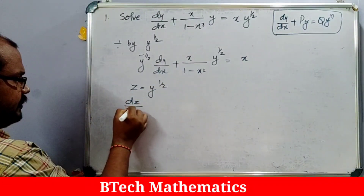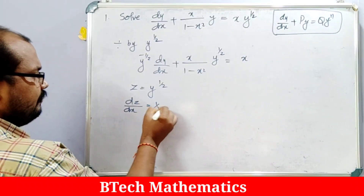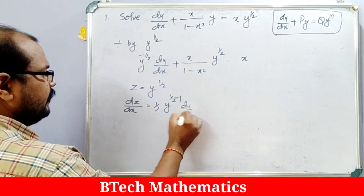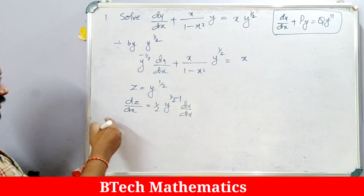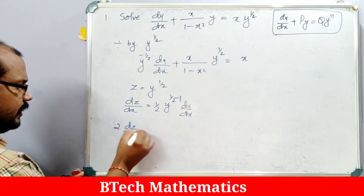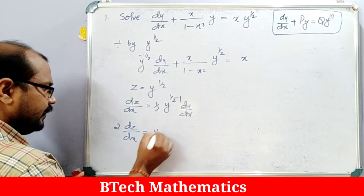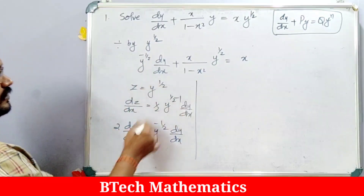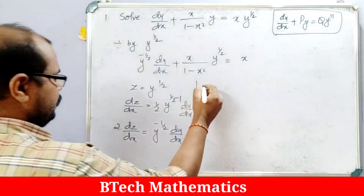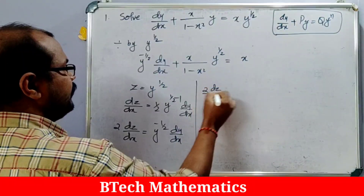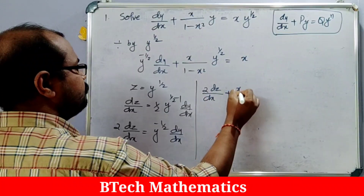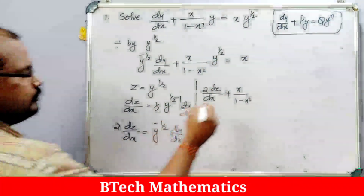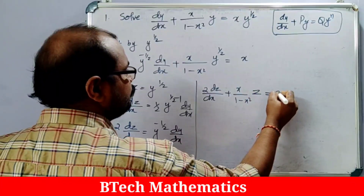With z = y^(1/2), we have dz/dx = (1/2)·y^(-1/2)·(dy/dx). Taking the 1/2 to the other side: 2·(dz/dx) = y^(-1/2)·(dy/dx). Substituting into the equation gives: 2·(dz/dx) + x/(1-x²)·z = x.